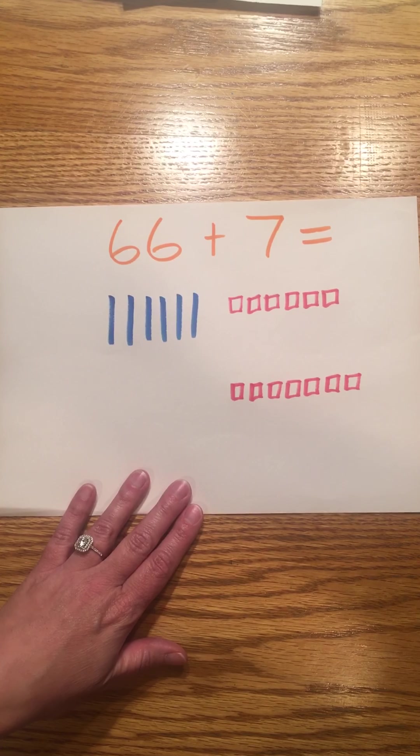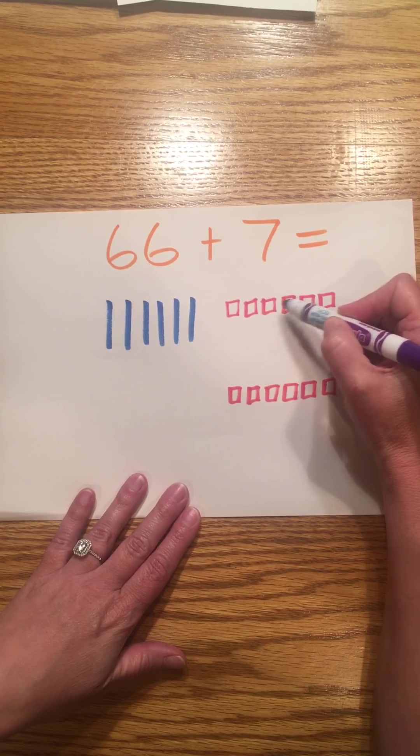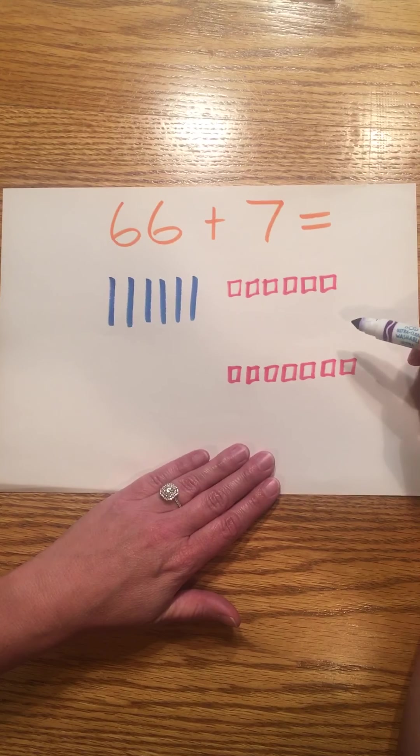Now I will add my ones together. Seven, eight, nine, ten, eleven, twelve, thirteen. I have thirteen ones. I cannot have thirteen ones.